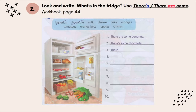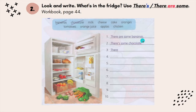The examples are given to you — number 1 and number 2. Look at number 1: there are some bananas. How do you know to use 'there are'? Because of the spelling for bananas — it ends with the letter S. Now look at number 2: there's some chocolate.